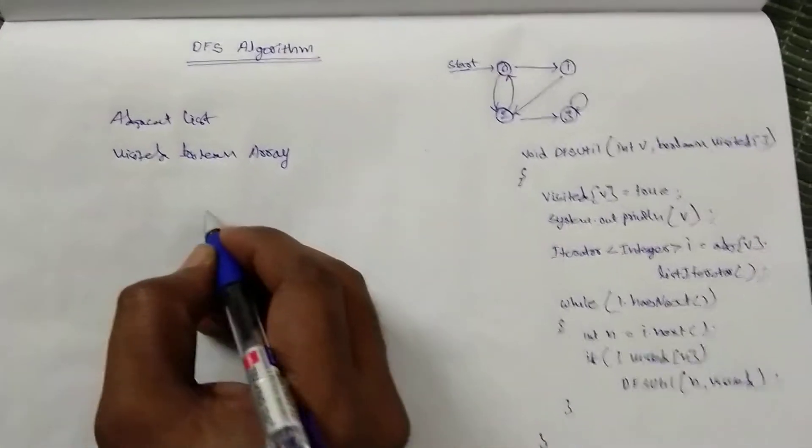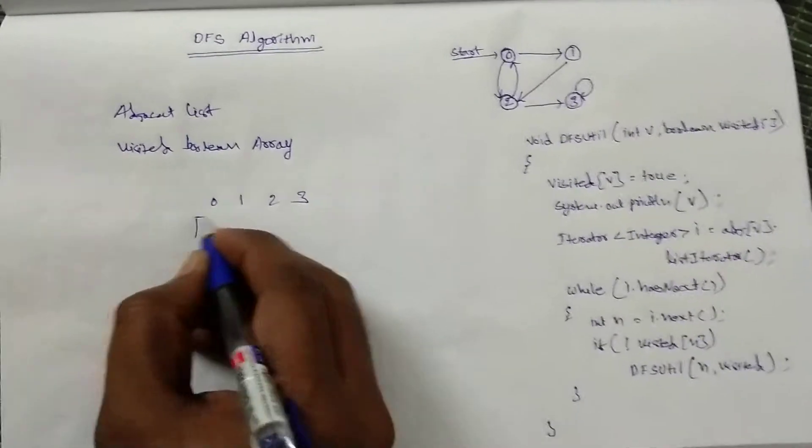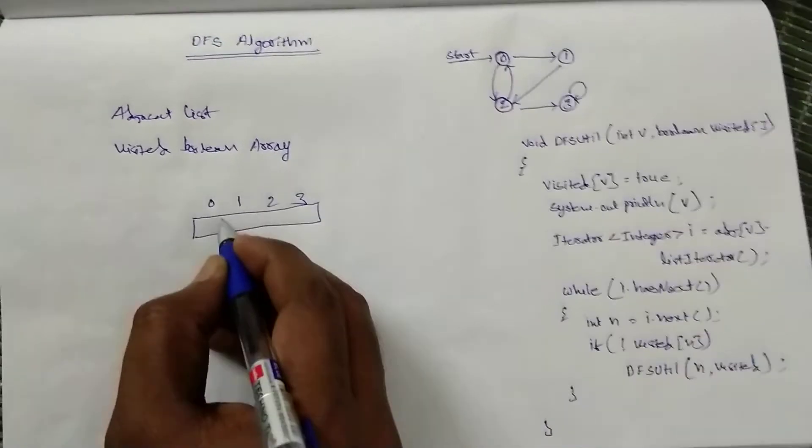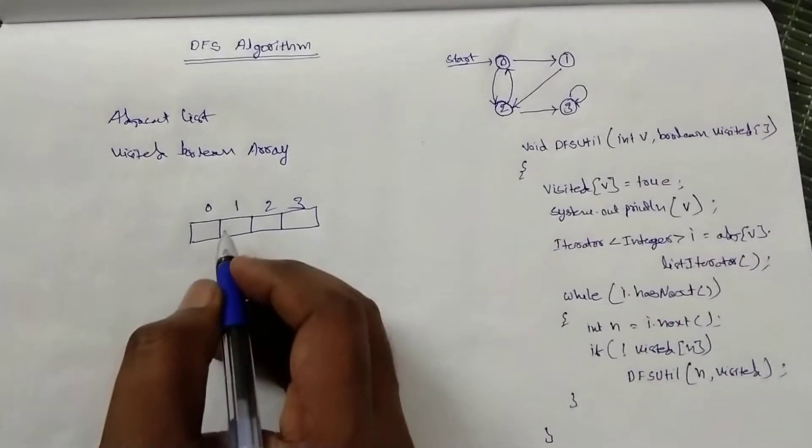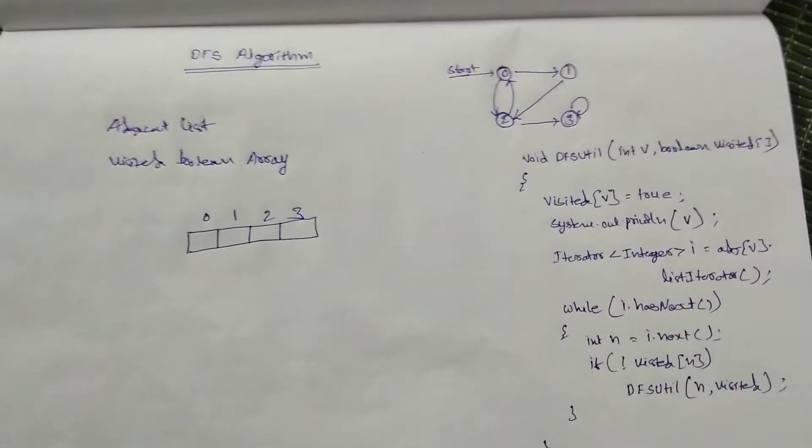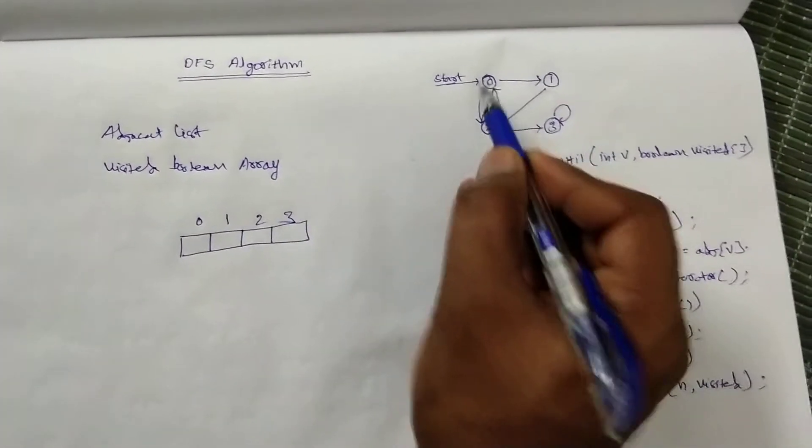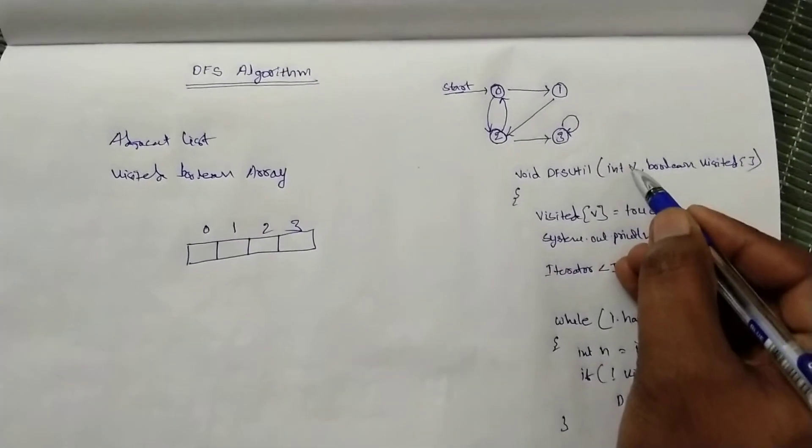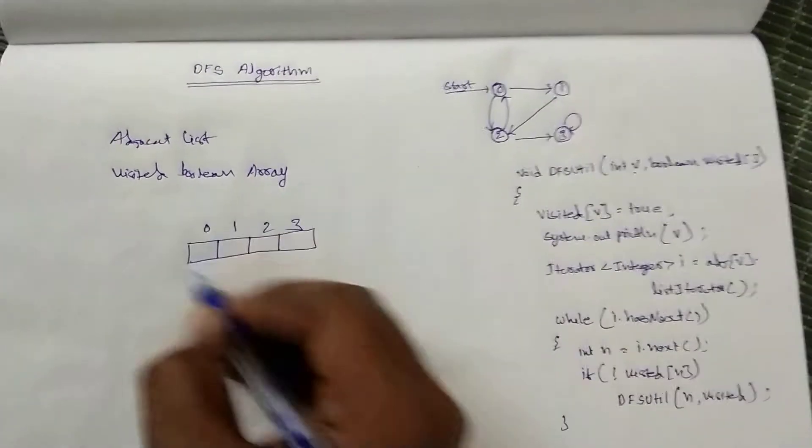Suppose there are four nodes. This is the visited boolean array. First, all will be false, so all are not visited. If you start with node 0, we will pass parameters as 0 and this array.